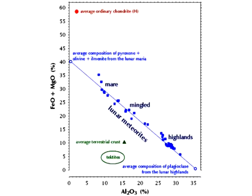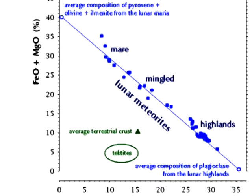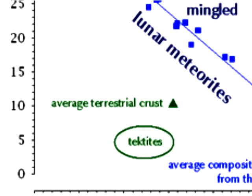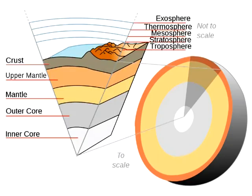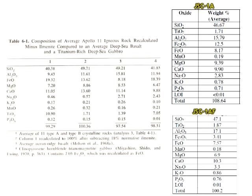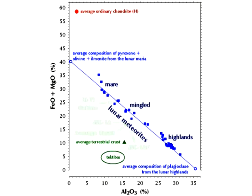Firstly, Korotev's diagrams compare lunar meteorites to the Earth's crust alone — that's the only undeniable Earth material he compares them to. He makes no attempt to compare these meteorites to basalts, which are rocks from the Earth's mantle — the rocks that are vastly similar to the Apollo samples. If we take the data for average sea basalts, JSC-1A and JSC-1AF, and apply it to this graph, we find that they plot perfectly along the line for lunar rocks.